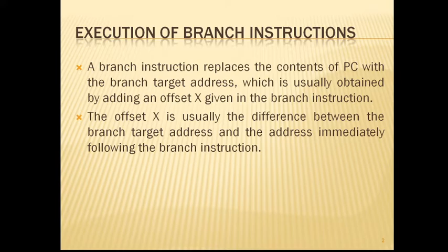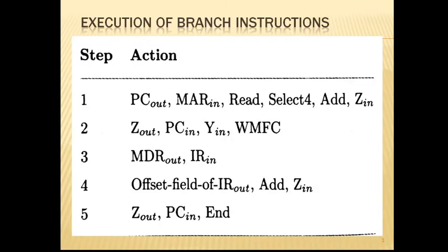In the figure below, that is 7.7 from the textbook, it shows the control sequence for an unconditional branch instruction. The processing starts as usual with the fetch phase. Like in the previous video, there is a fetch phase, then an instruction fetch phase, and then an instruction execution phase. This phase will end when the instruction is loaded into IR in step 3. The first three steps will remain the same here also.